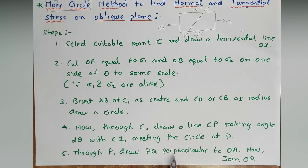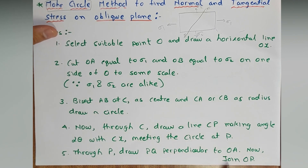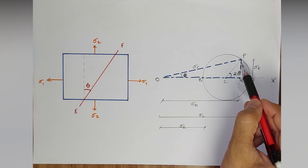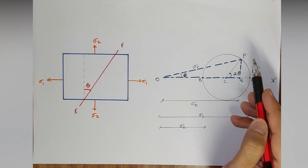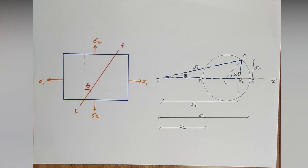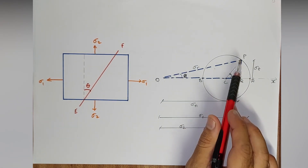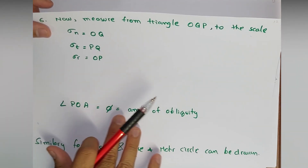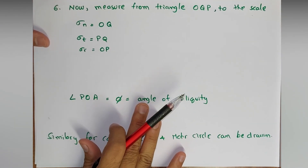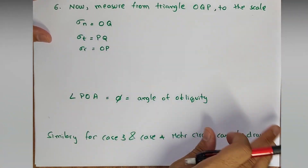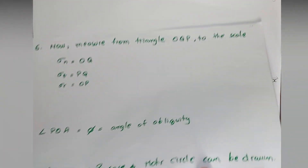Step 5 — through P, draw PQ perpendicular to OA, then join OP. Through P I have drawn a line perpendicular to OA, which gives triangle OQP, highlighted here. Step 6 — measure from triangle OQP to the scale.